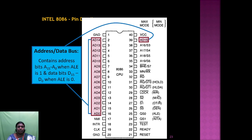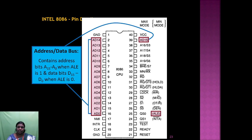The multiplexed address/data pins contain address bits A15 to A0 when ALE is 1, and data bits D15 to D0 when ALE is 0. So when ALE is high, only address bits are accessible; when ALE is low, only data bits are accessible.